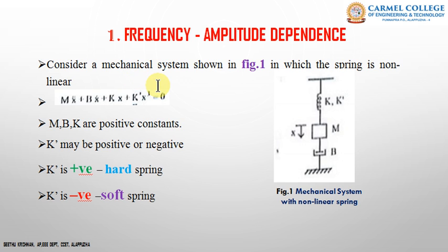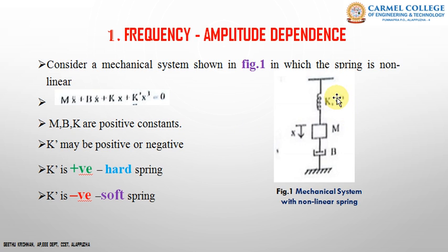Where m, b, and k are positive constants — that is, the values of mass, friction coefficient, and spring constant k are positive. The nonlinearity k' may be positive or negative: k' is positive for a hard spring and k' is negative for a soft spring.